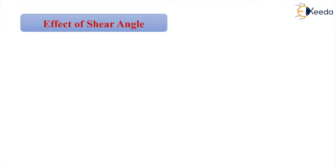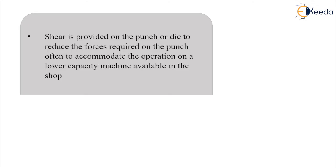Regarding the effects of shear angle: shear is provided on the punch or die primarily to lower the cutting forces in the sheet metal operation. The shear is provided to reduce the forces required, often to accommodate the operation on a lower-capacity machine available in the shop. The key function of providing shear is to reduce the cutting forces in the sheet metal operation.